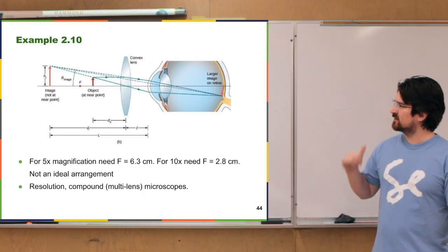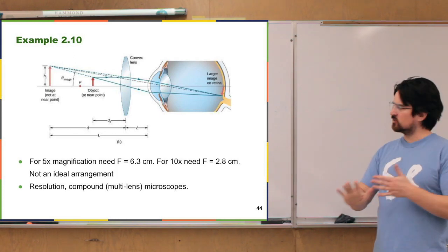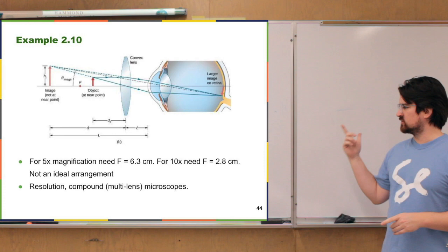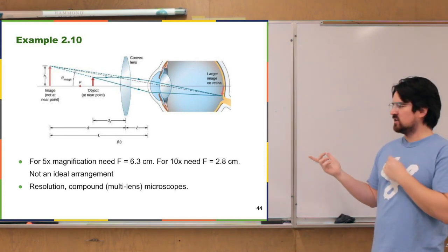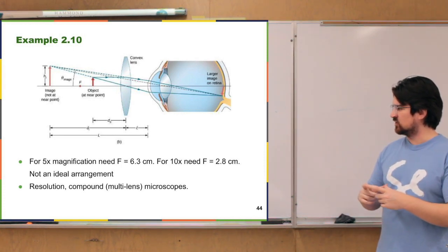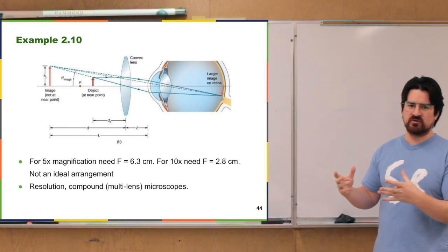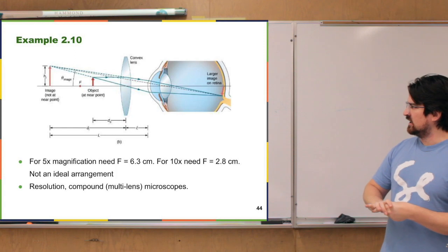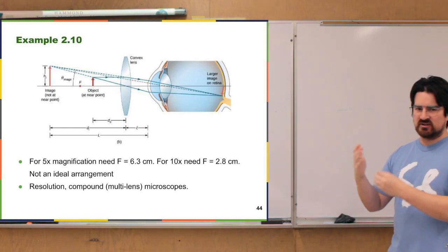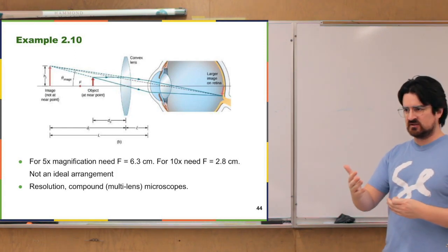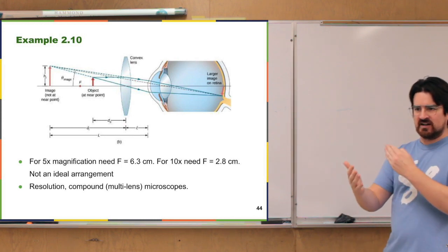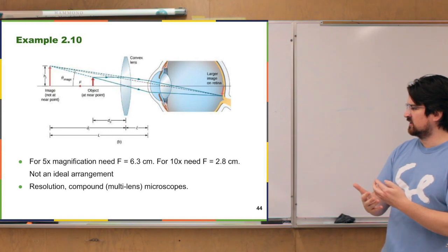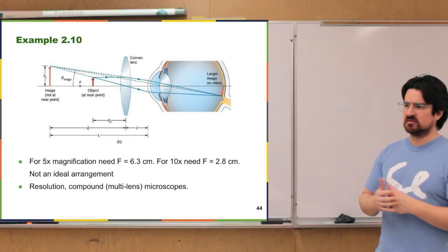Looking at an example — the results are pretty straightforward to point out. For larger and larger magnification with the magnifying glass, you need a shorter and shorter focal length — a more and more rounded lens. But it becomes less ideal, because if you want much greater magnification, your eye and the object need to be really close to the lens, which is just not a great, awkward setup.